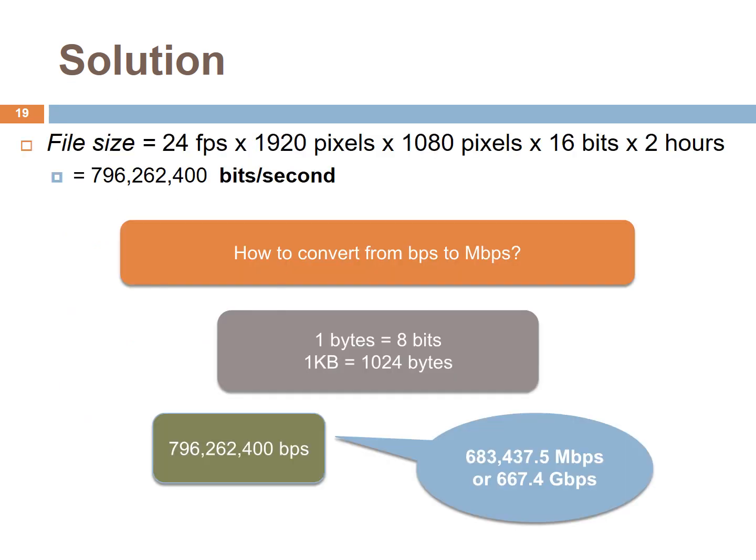To convert bits to megabytes: 1 byte is 8 bits and 1 kilobyte is equivalent to 1024 bytes. So you can convert the video file size from 796,262,400 bits per second to megabytes per second or gigabytes per second. Try to calculate this and solve it on your own.